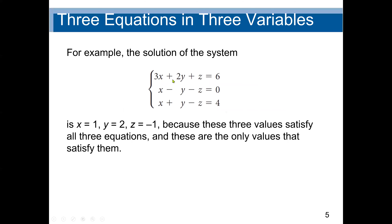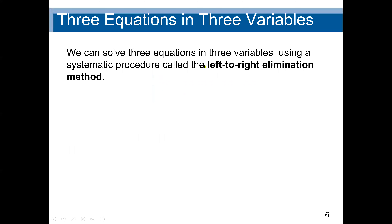Here is an example: we have 3X minus 2Y plus Z. We have three equations and the three variables are X, Y, and Z. We can solve this equation for the values of X, Y, and Z using determinants, matrices, or in this case we are using the left-to-right elimination method.